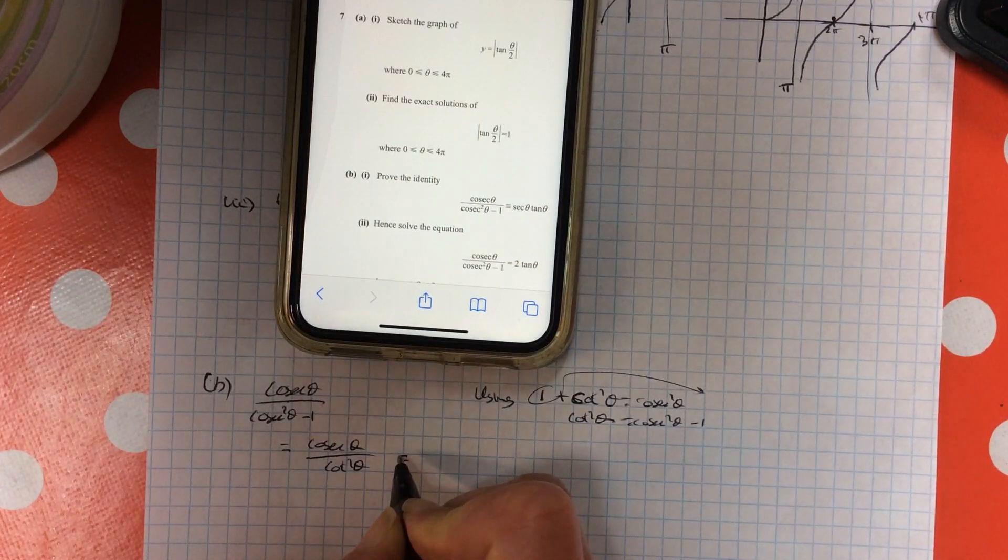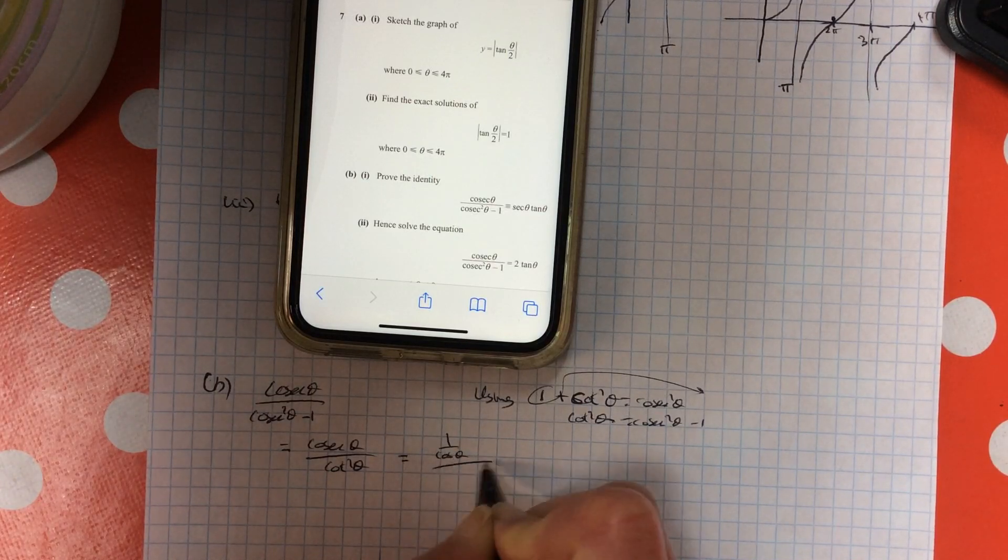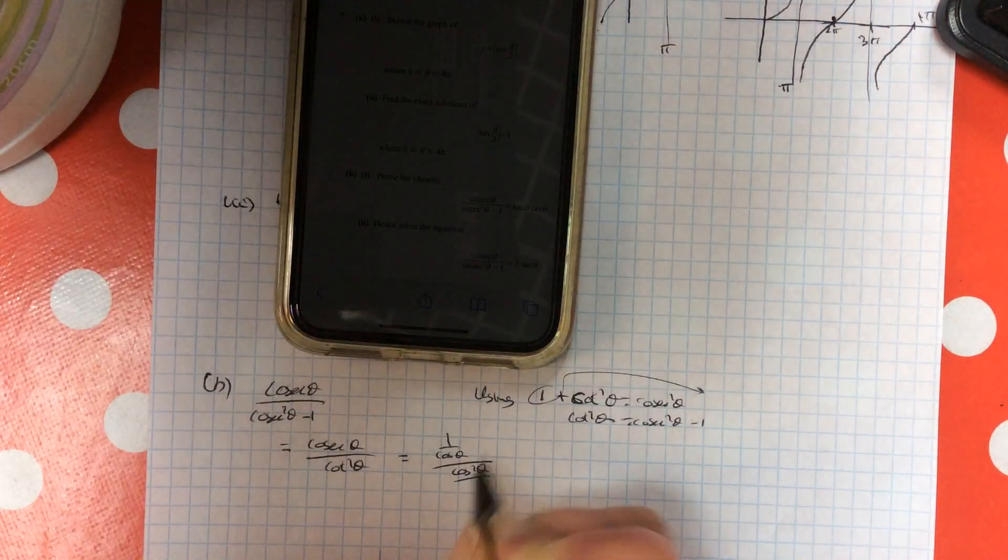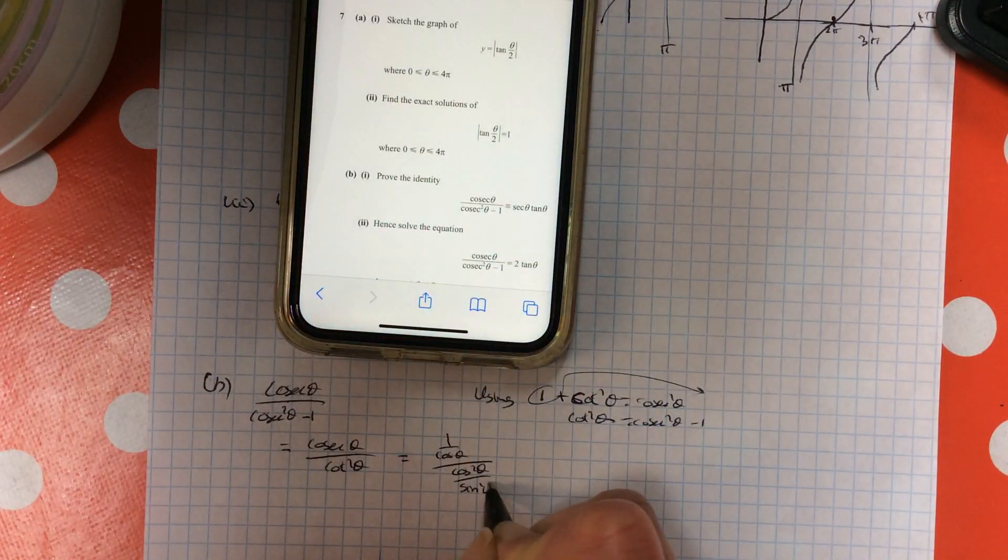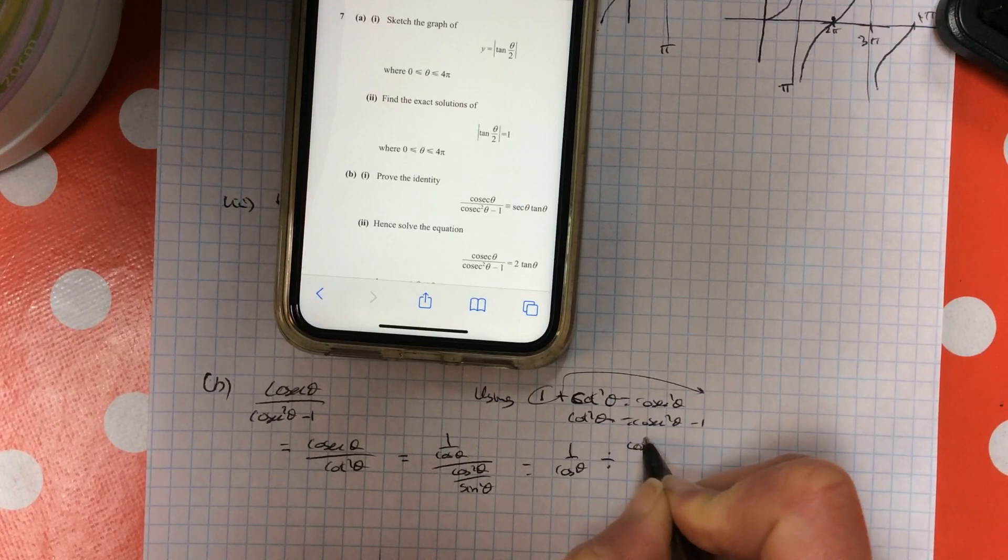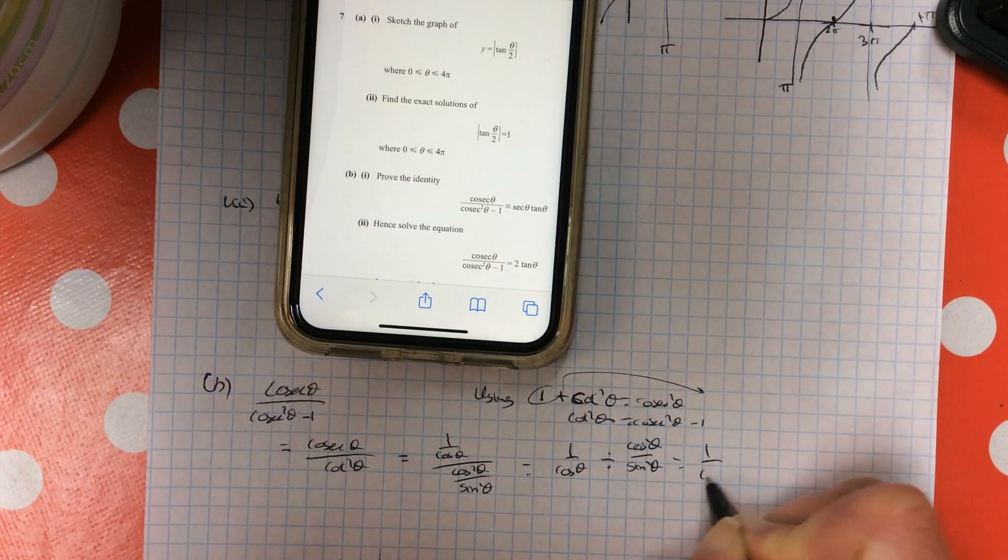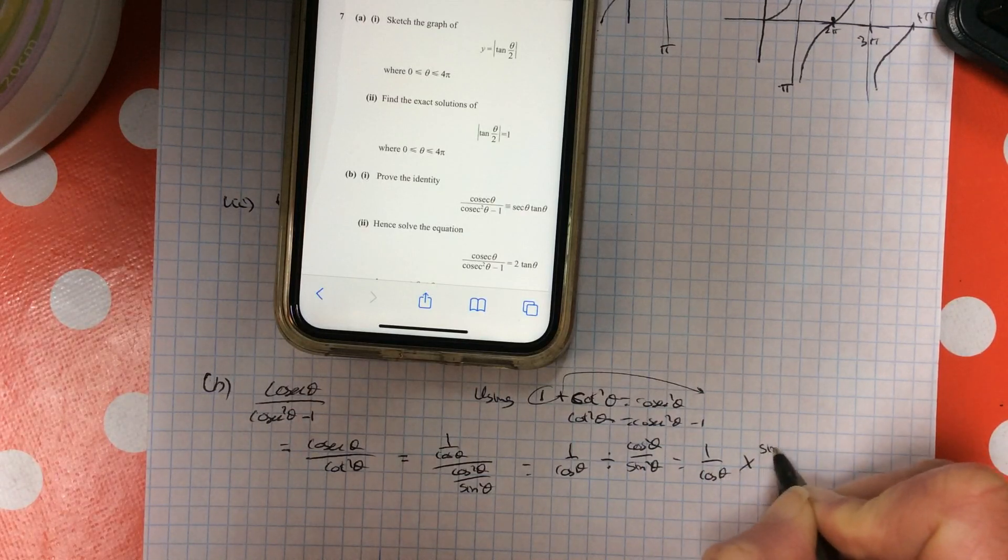So the bottom line there becomes cot squared. Cosec is the same as 1 over sin. Cot squared is cos squared over sin squared. So I put 1 over sin on the top, divide it by cot squared over sin squared on the bottom. To divide by a fraction, you turn the 1 after the division sign upside down and multiply.